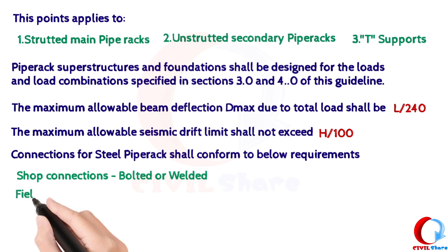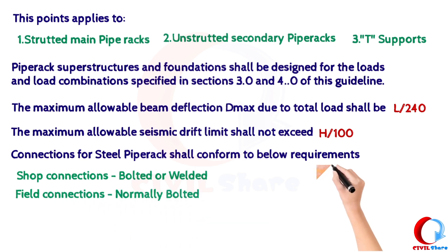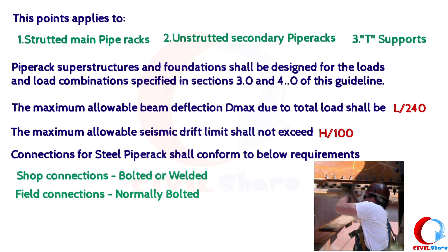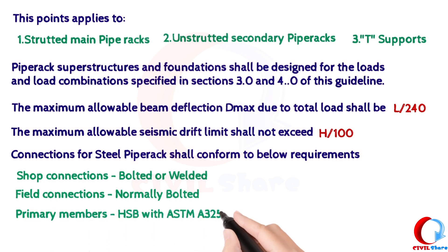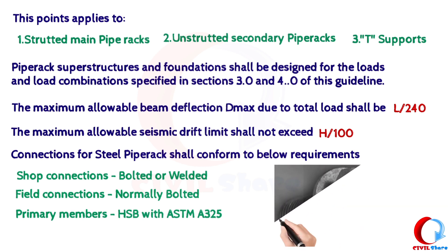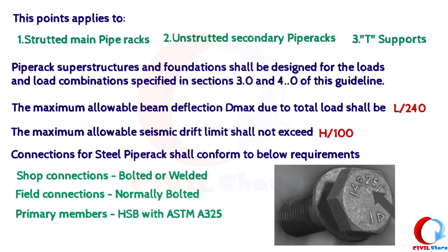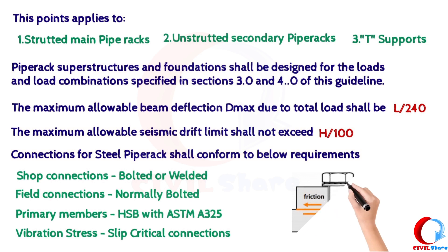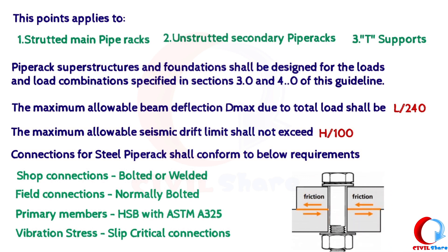Connections for steel pipe rack shall conform to the following requirements. Shop connections — bolted or welded connections made in a fabrication shop — are called shop connections; bolting and welding may be used for shop and field connections, but the fabrication shop will have a preferred fastening method. Field connections are normally bolted connections made in the field by the steel erector; they are typically bolted, though sometimes field-welded when bolted connections are not suitable. Primary members use HSB with ASTM A325 high-strength medium carbon steel, the most common bolts used in building construction. Slip-critical type connections shall be used in connections subject to vibration or repeated stress reversal.